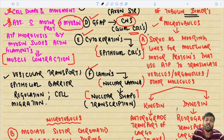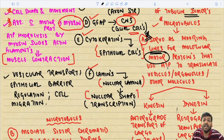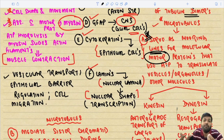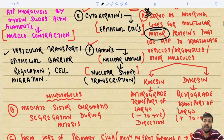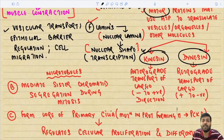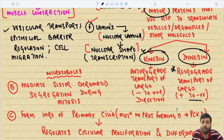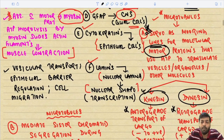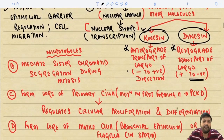The functions of microtubules include serving as mooring lines for molecular motor proteins that use ATP to translocate vesicles, organelles, or macromolecules. Two key motor proteins are kinesin — responsible for anterograde transport from the negative to positive end — and dynein — responsible for retrograde transport from the positive to negative end.